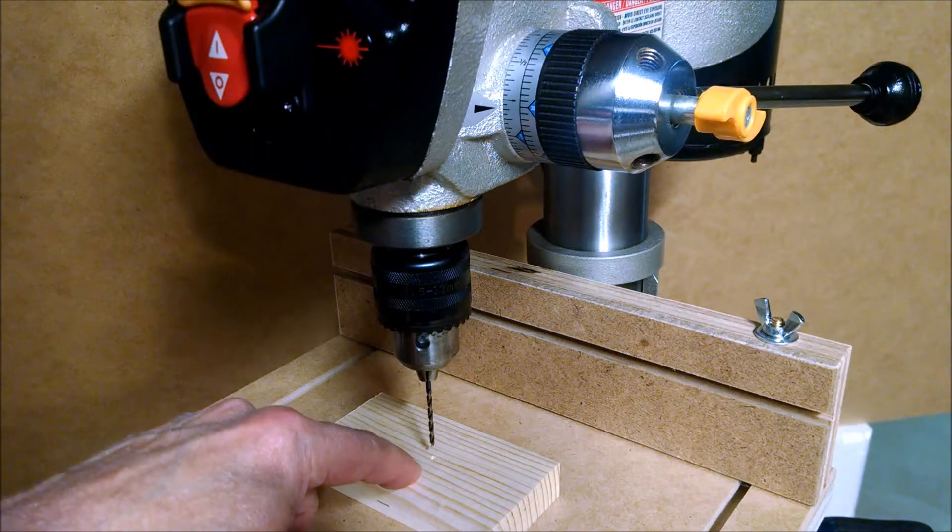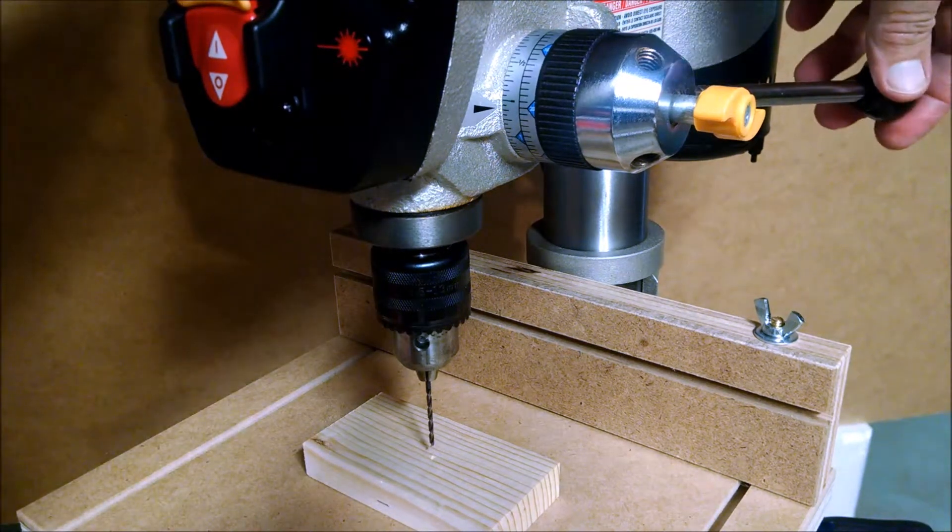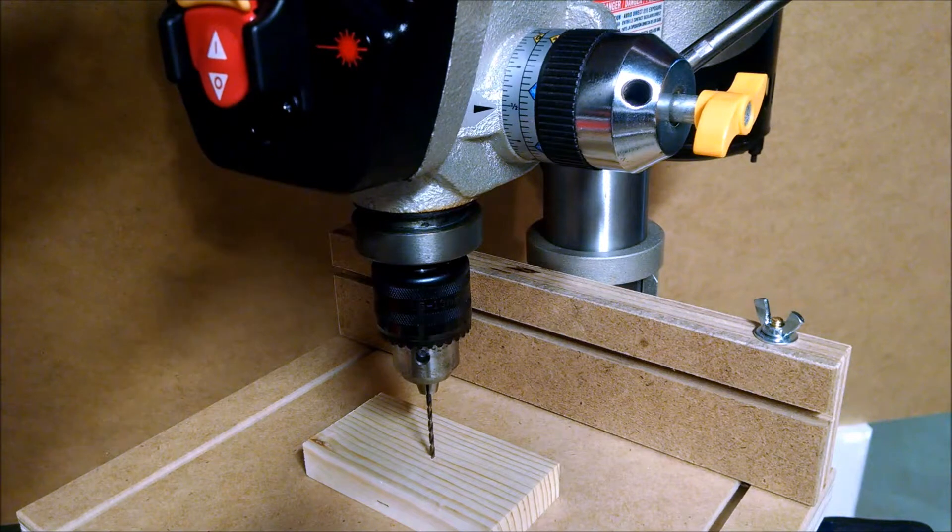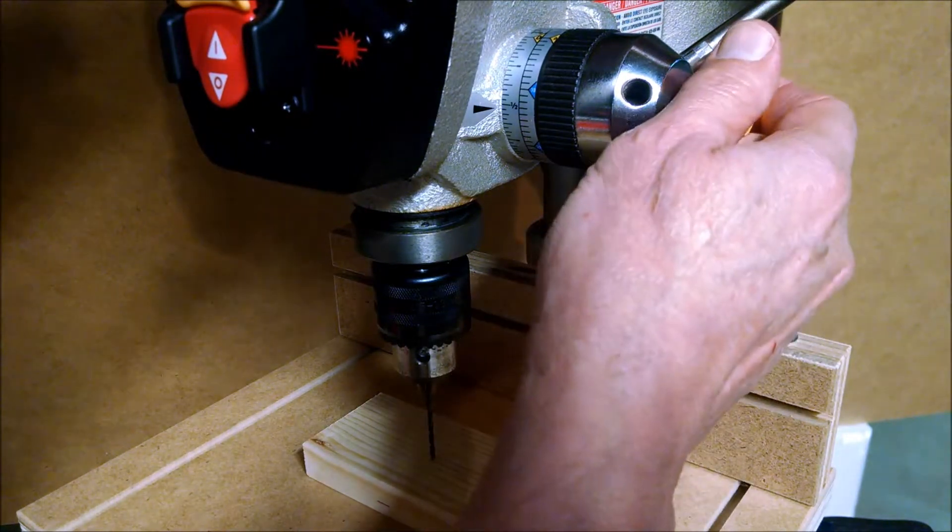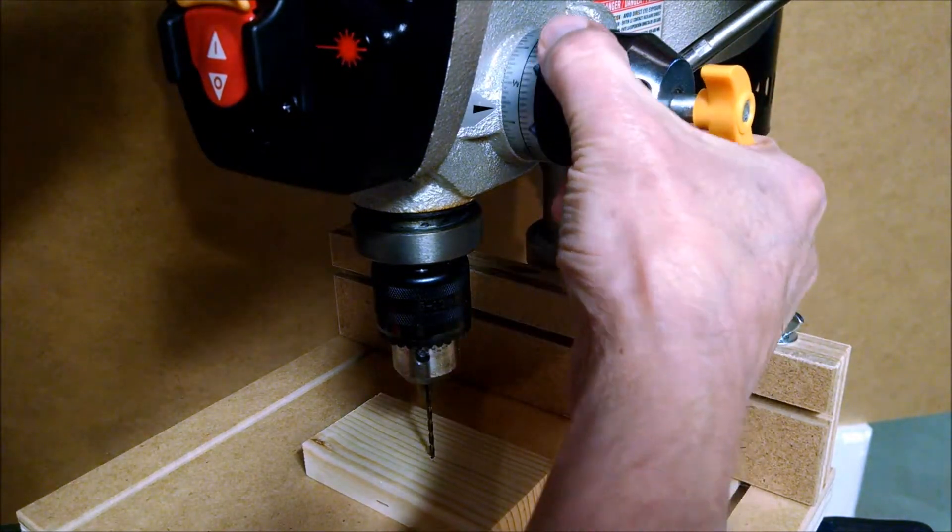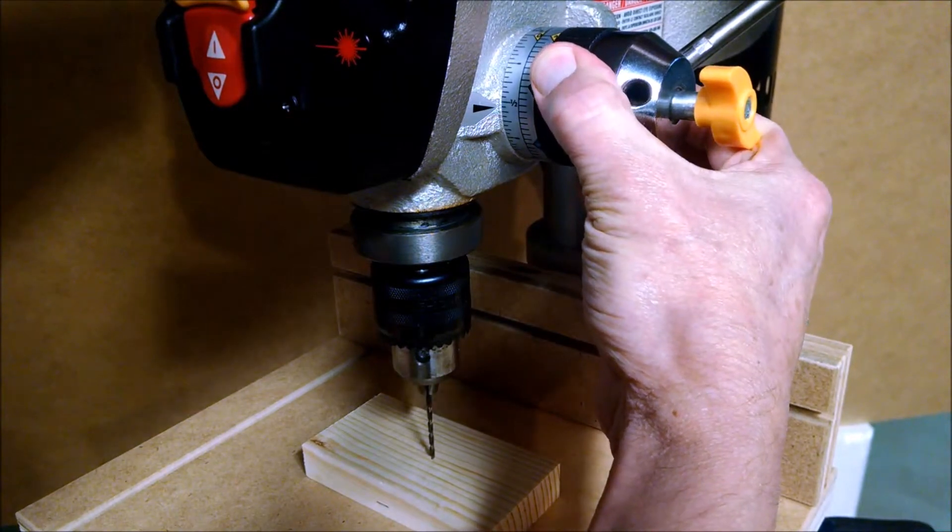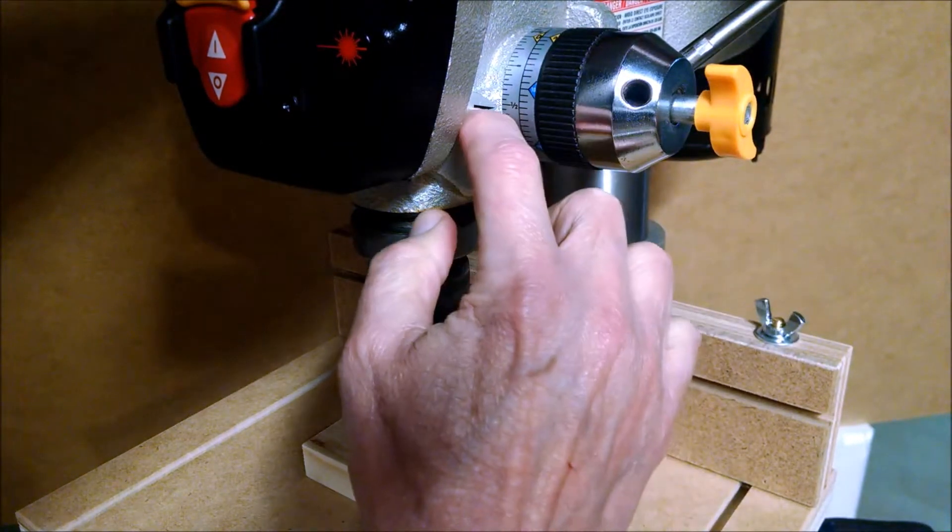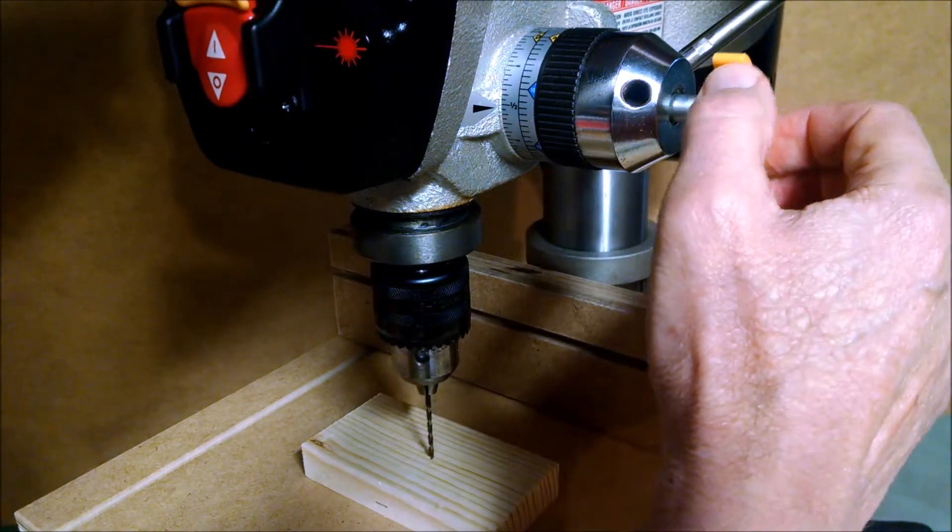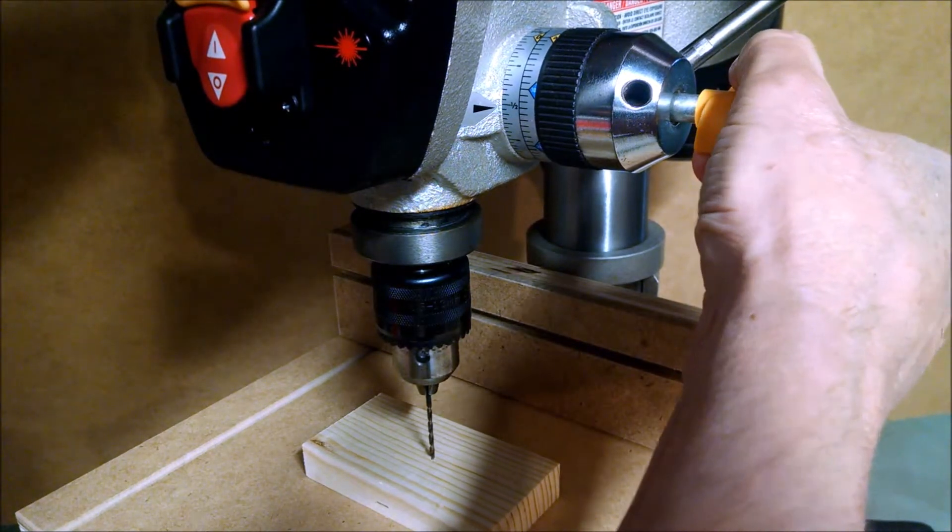The first thing you want to do to adjust the drilling depth gauge is to lower the bit to the surface of the workpiece. Then loosen the knob and adjust the depth gauge exactly to the mark, and then tighten it up while you're still holding that arm.